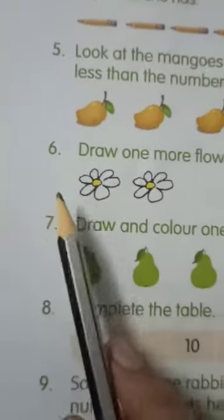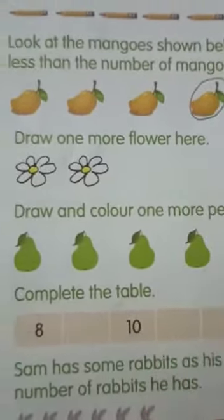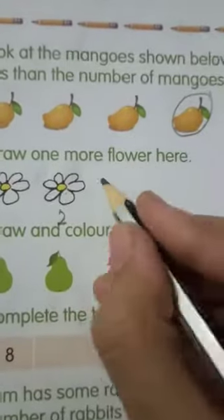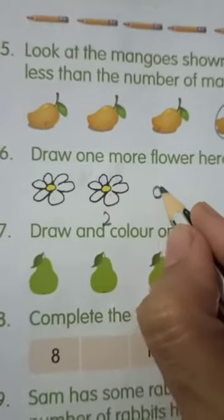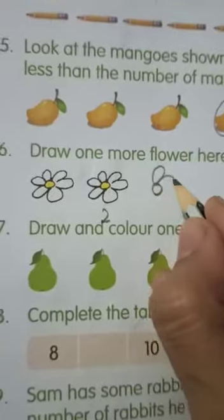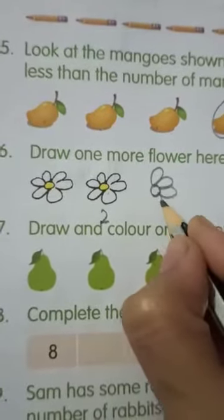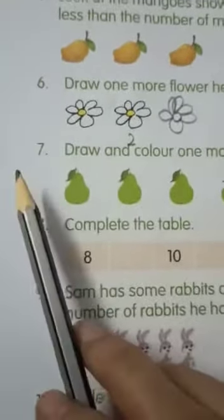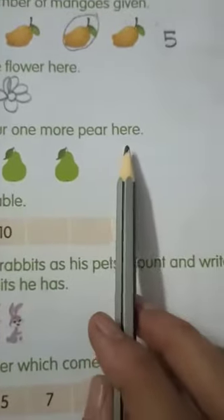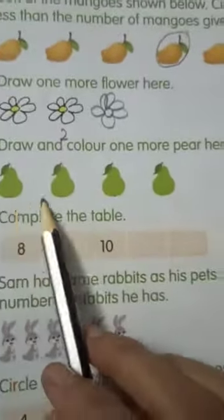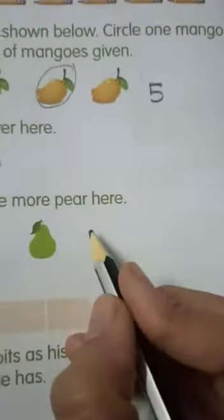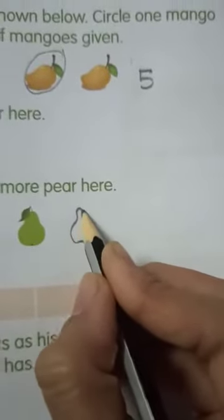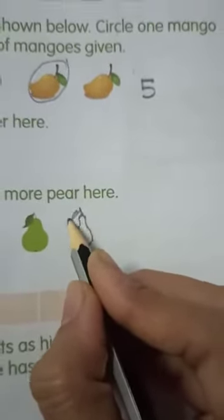The sixth question is, draw one more flower here. How many flowers are there? 1, 2. What is 1 more than 2? 3. So, let's draw one more flower here. The next question is, draw and color one more pear. Here, we have 4 pears. And we have to draw one more pear. And we have to color this pear. Color it with green color. Okay, students.